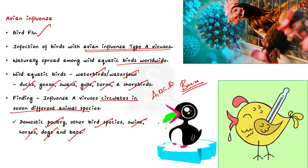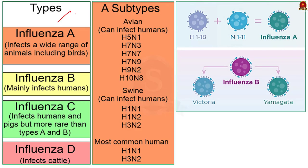This table contains the different influenza viruses and their nature. Influenza A infects a wide range of animals including birds. Type B mainly infects humans. Type C infects humans and pigs but is more rare than type A and B. Type D infects cattle. Depending on the host where it originates, influenza A viruses can be classified as avian influenza, swine influenza, or other types of animal influenza viruses.